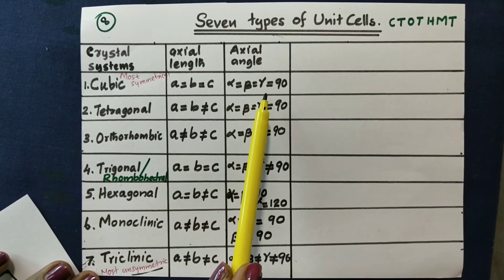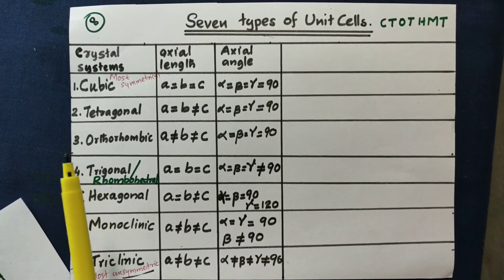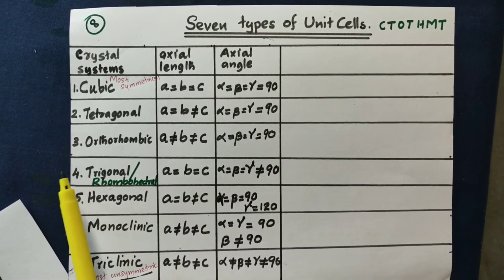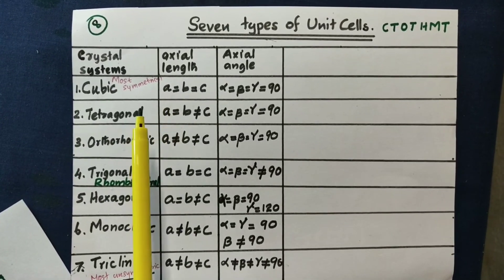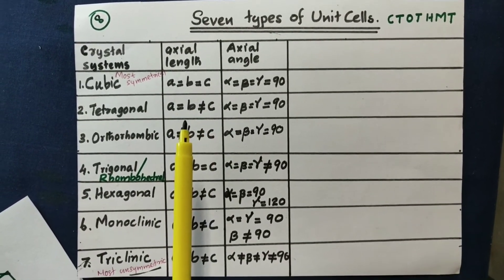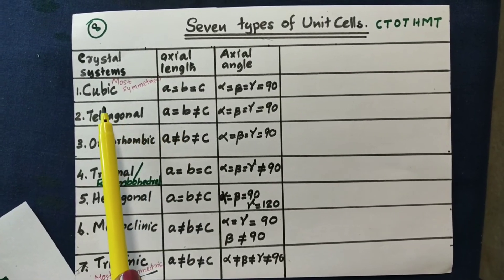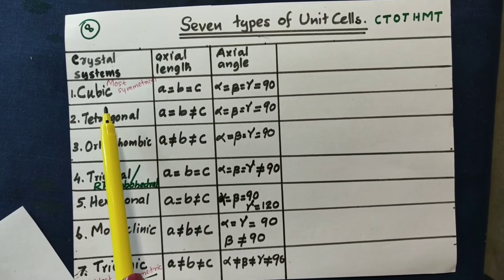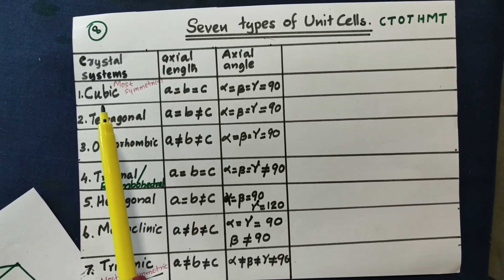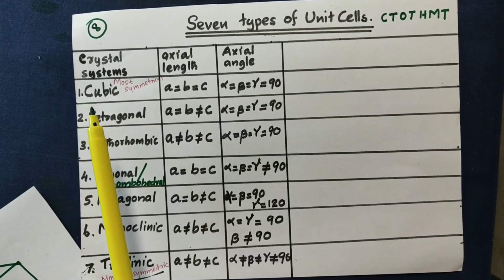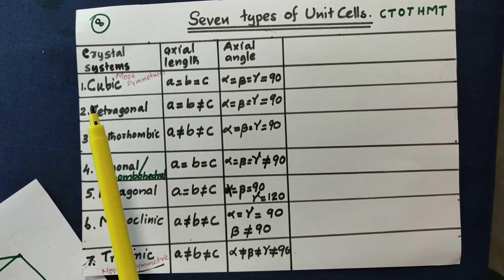The cubic system is the most symmetrical system. It has variations: 1, 2, 3, and 4. The 4 corresponds to different axial lengths. There are variations among the 3 units.